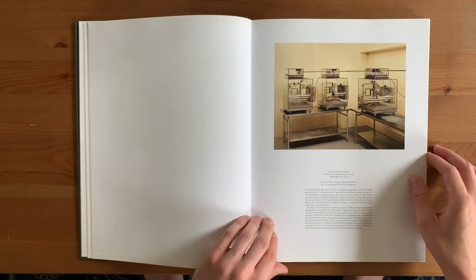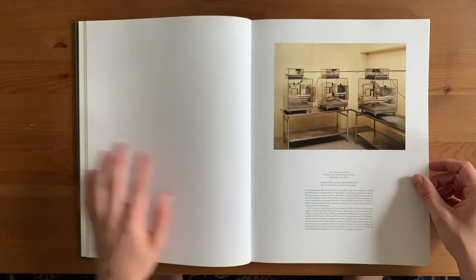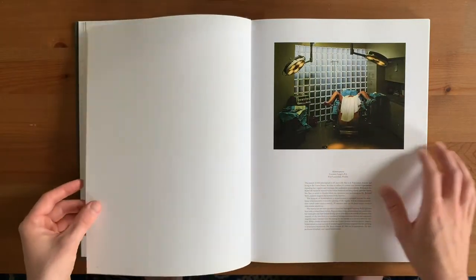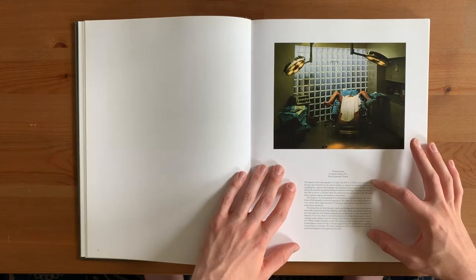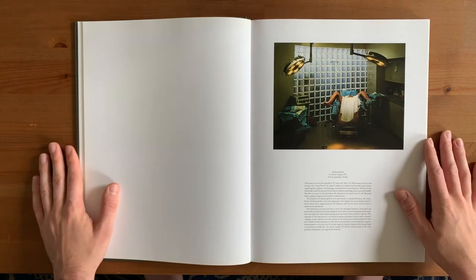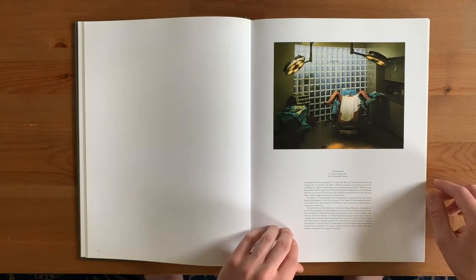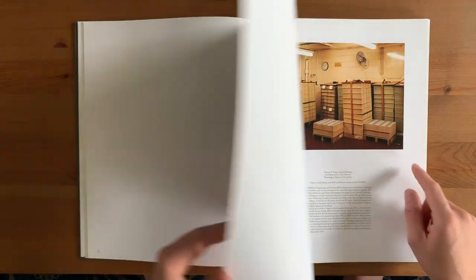This is the Avian Quarantine Facility, the New York Animal Import Center. And a big explanative paragraph right there. And you kind of see the template here. It's very quiet and it's very repetitious. The form and the style kind of goes away in service of the images. The images are what changes and you're not distracted by any form or context.